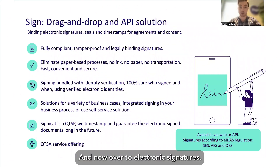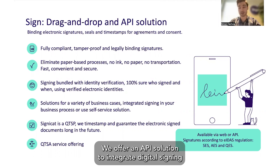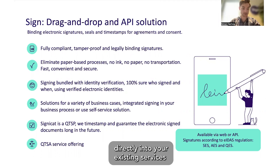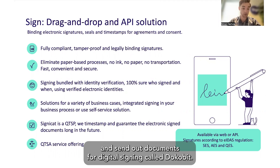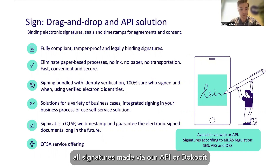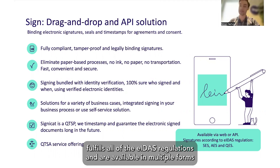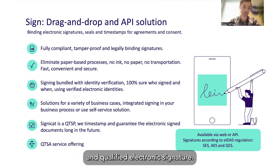And now over to electronic signatures. We offer an API solution to integrate digital signing directly into your existing services, as well as a standalone application where you simply log in and send out documents for digital signing, called Docubit. All signatures made via our APIs or Docubit fulfill all of the EDAS regulations and are available in multiple forms, such as standard electronic signature, advanced electronic signature, and qualified electronic signature.